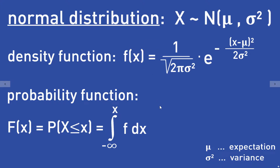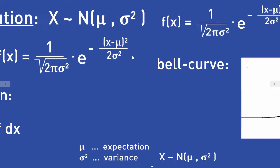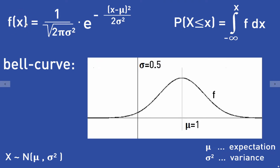It's easier to explain all this by using a picture. The density function f describes a so-called bell curve. I have plotted this function f for mu equal to 1 and sigma equal to 0.5 — so I have inserted mu equal to 1 and sigma squared equal to 0.5 squared and plotted this function in this picture here.